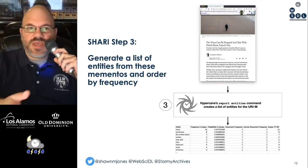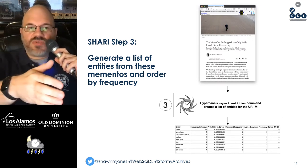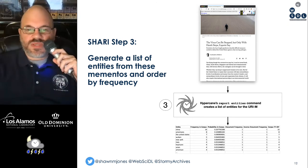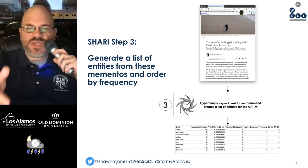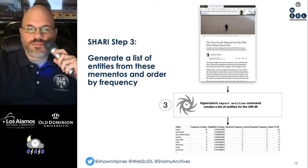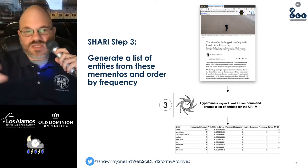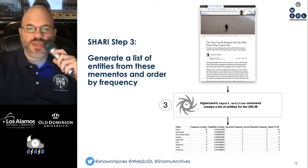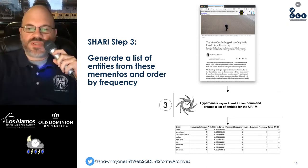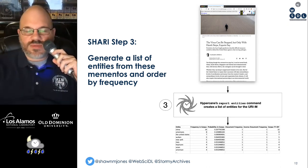Sherry, step three, is where we generate a list of entities from these mementos and order them by frequency. We get a list of mementos from a particular URIM or list of URIMs, and then get information like the entity, the probability in corpus, the document frequency, and so on.